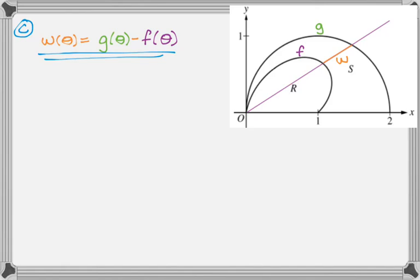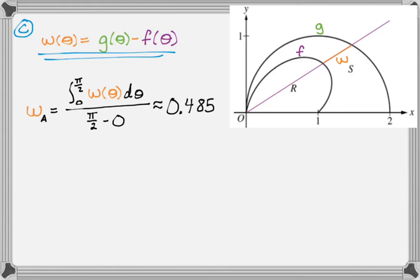So I know that average value is the integral divided by the interval. So it's going to be the integral from 0 to pi over 2 of W of theta, D theta, and then divided by pi over 2 minus 0. And then I'm going to let a calculator do the work, and I get approximately 0.485. And that's actually just the answer to that question. So let's move on to part D, which references part C.